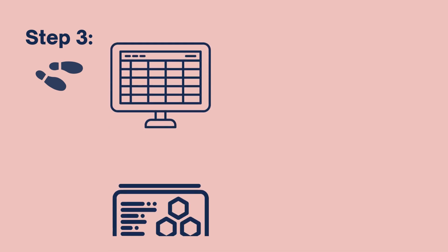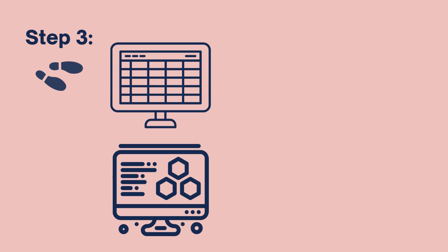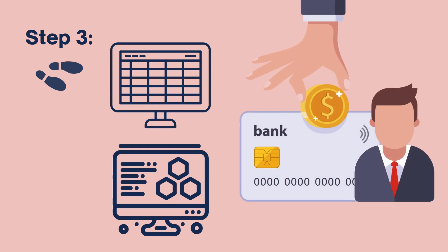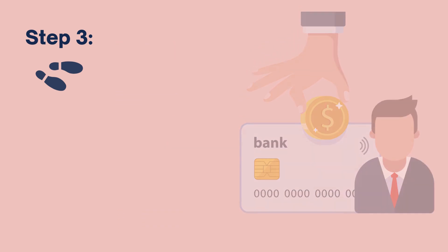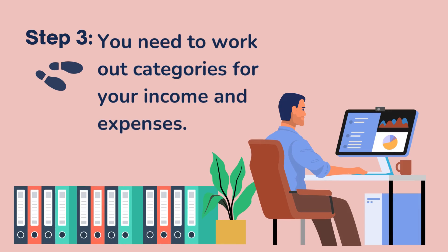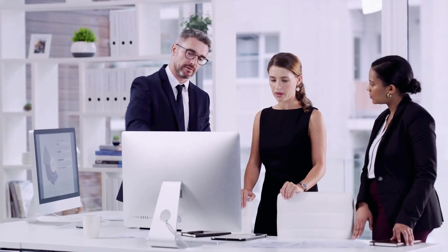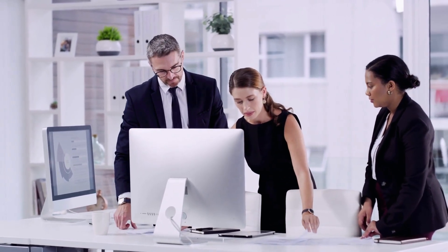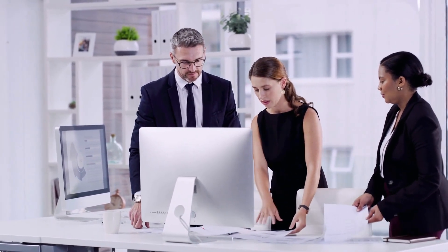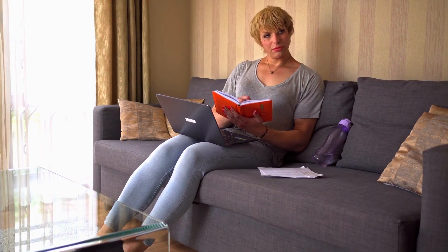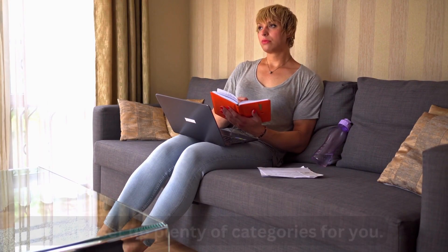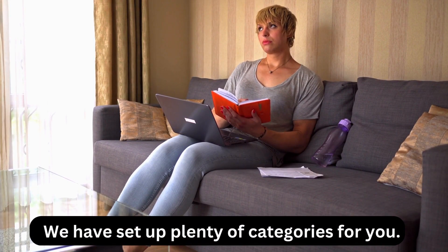Step 3. Once you've decided on whether you're going to use a spreadsheet or software to do your books, and you've set up your business bank account and other finance products, you need to work out categories for your income and expenses. This can be fairly easy to do in most cases, and thankfully some of it may already be done for you. If you decide to use one of our spreadsheets, you'll see that we've set up a bunch of categories already.